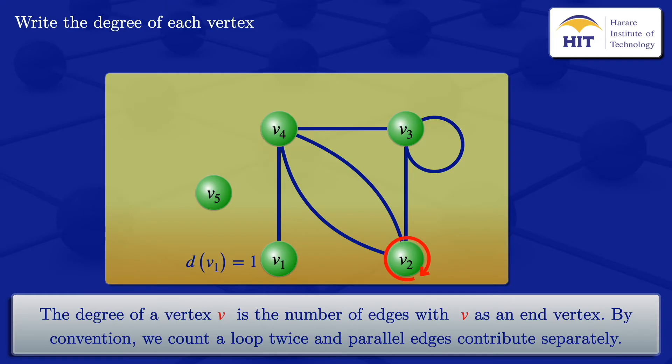Now move on to vertex 2 here. It is an end vertex of these edges, 3 edges. Therefore, the degree of vertex 2 is 3.